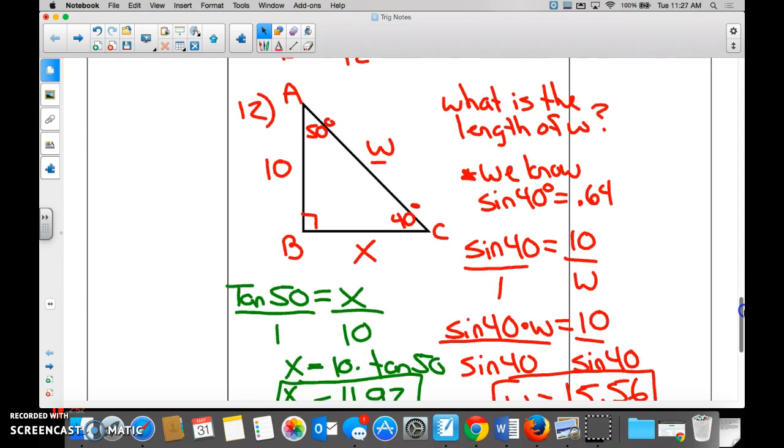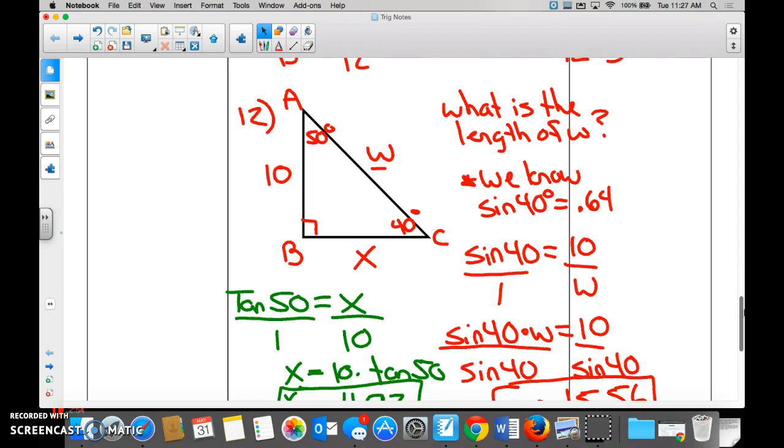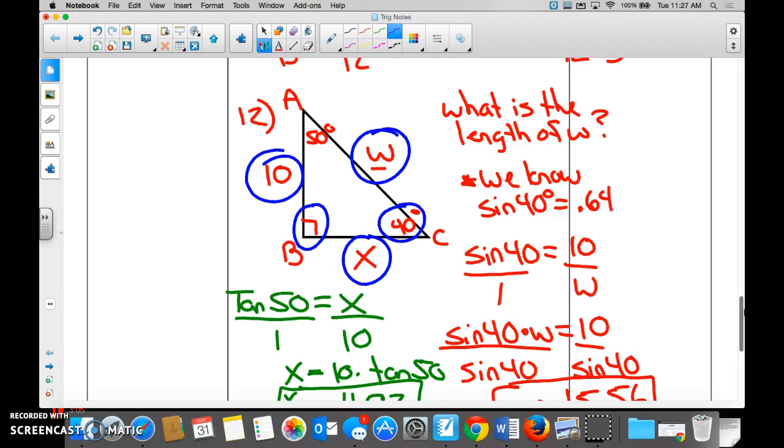Here we go. Number 12. What is the length of W? This is the types of problems you're going to be solving for your homework. What is the length of W? We do not know W. We know that we have X. We know that we have a side of 10. And we know we've got a 40, 50, and 90 right angle. Right?